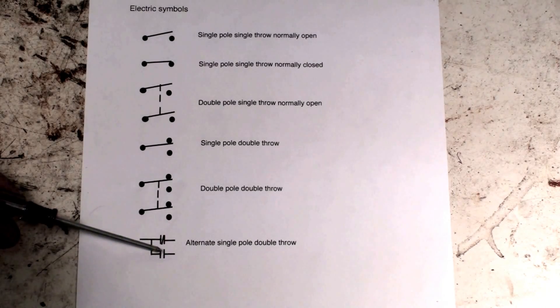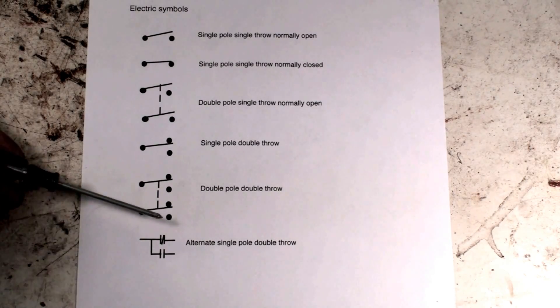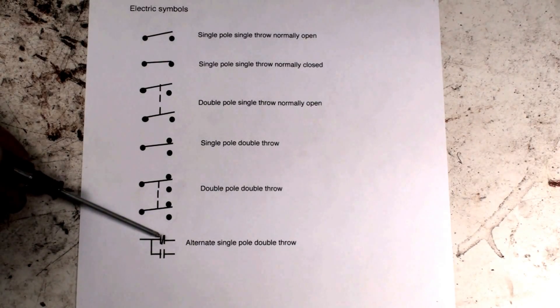When I have these two contacts like this that are open, that means there's no continuity through there in the normal position. By the way, normal means power off and nothing's happening.